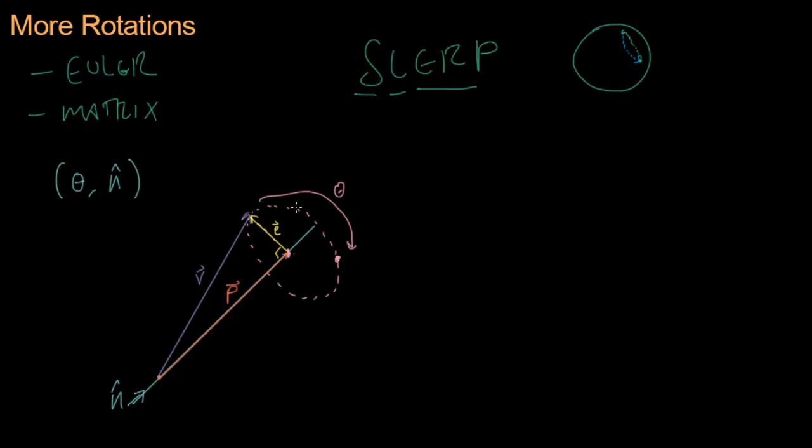And we're going to rotate E around in this circle until we get to E prime. E prime is the rotated one. So what we're looking for is V prime, the rotated vector that points at this point right here.